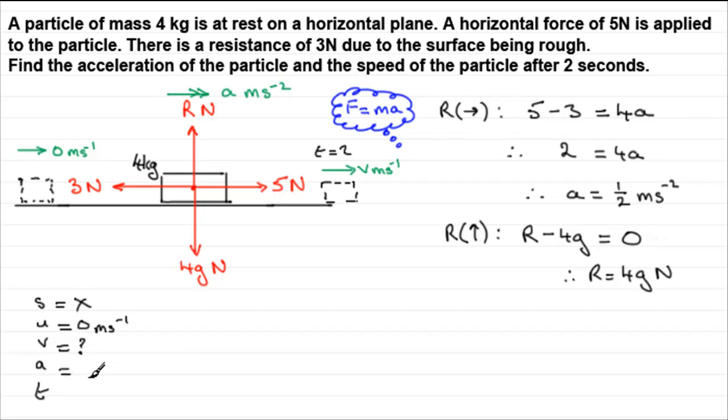A, the acceleration. What's that? Half a meter per second per second, ms to the minus two. And the time? We know what that is. It was two seconds. So t is two. So how are we going to find out v when we know u, a and t?